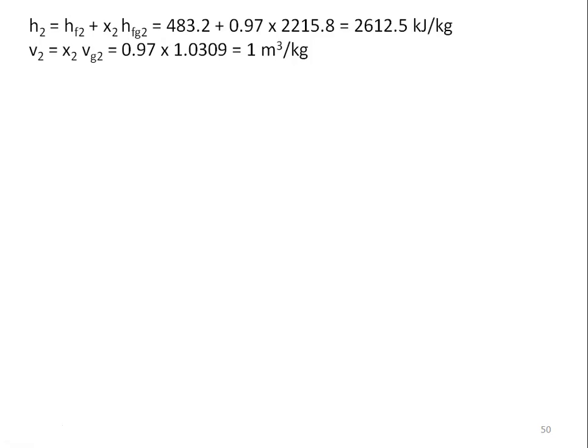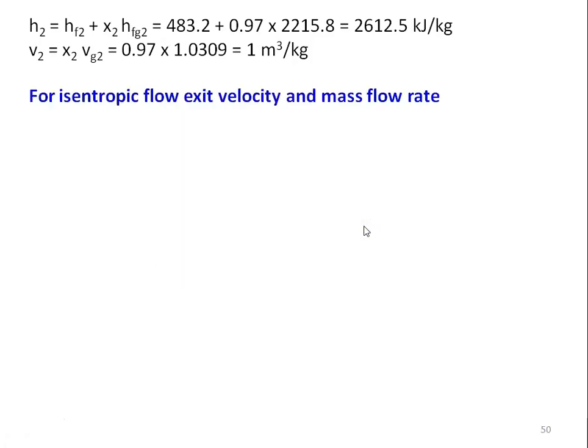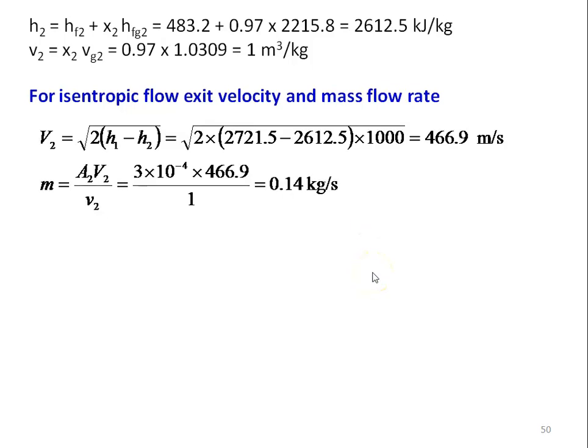Exit properties for isentropic flow: H2 = Hf2 + x2·Hfg2 = 483.2 + 0.97 × 2215.8 = 2612.5 kJ/kg; V2 = x2·Vg2 = 0.97 × 1.0309 = 1.0 m³/kg. Isentropic exit velocity: V2 = √(2 × (2721.5 − 2612.5) × 1000) = 466.9 m/s. Mass flow rate = A2·V2 / v2 = 3 × 10⁻⁴ × 466.9 / 1.0 = 0.14 kg/s.